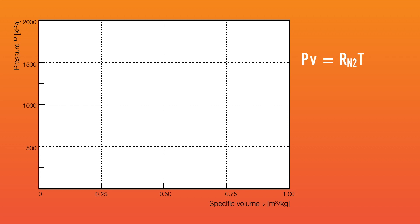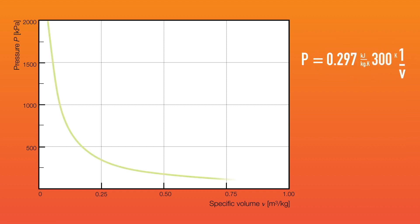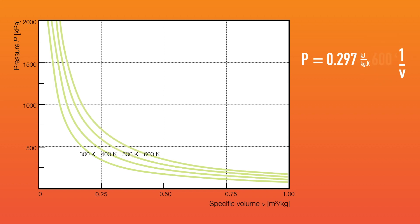Here we have pressure plotted against specific volume. To graph this behavior, let us make pressure the dependent variable and volume the independent variable. R and T are held constant — remember, R is the universal gas constant divided by the molecular weight of nitrogen. Now we can plot pressure values with increasing specific volume for a constant temperature of 300 Kelvin. This line is called an isotherm. We can do the same for 400, 500, and 600 Kelvin. We just generated a property chart showing us that as nitrogen pressure increases at a constant temperature, the gas occupies smaller and smaller volume.